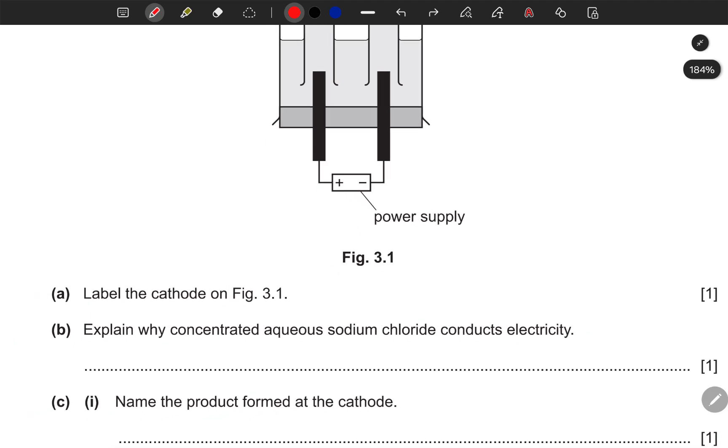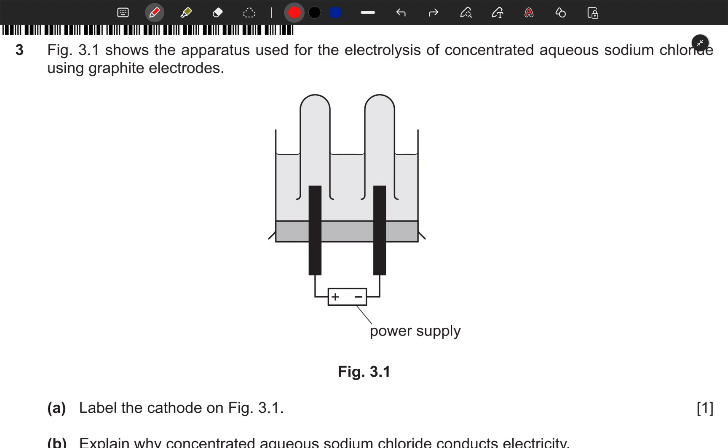The first question says label the cathode on Figure 3.1. So we need to label the cathode. You can see that we have a direction here. There is a negative sign here. So where we are here, that's where the cathode is. This one. This is our cathode.